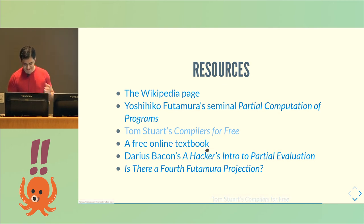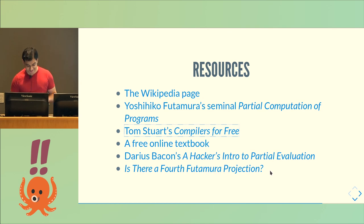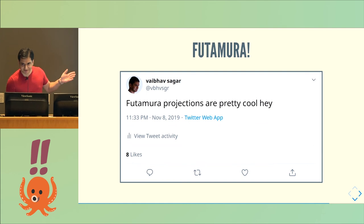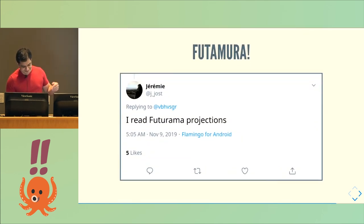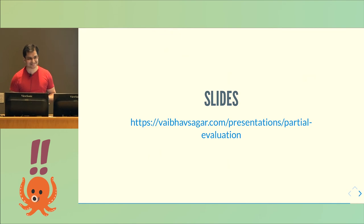There's a textbook by the people who did interesting research into partial evaluation. And finally, a really interesting talk about a fourth Futamura projection, going even further than the three we've covered. This is really all I want you to take away from this talk. Thank you.